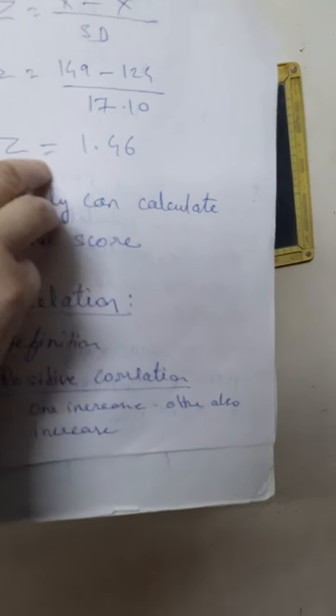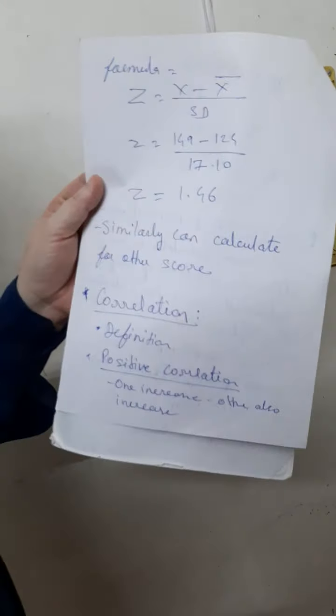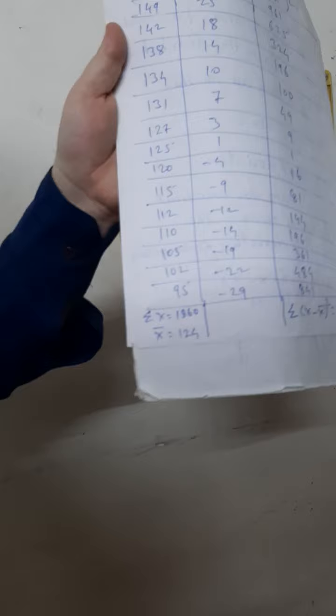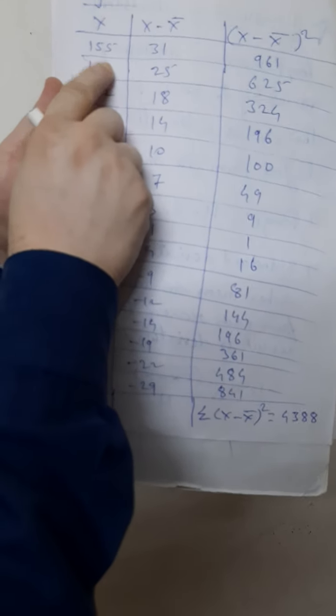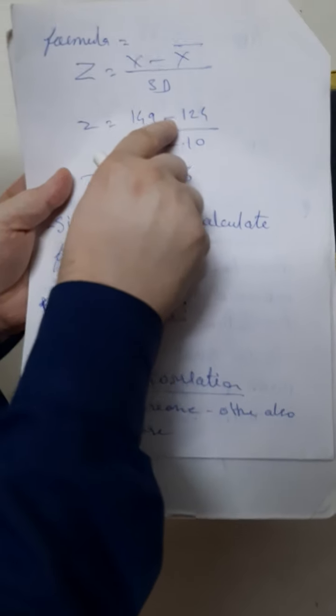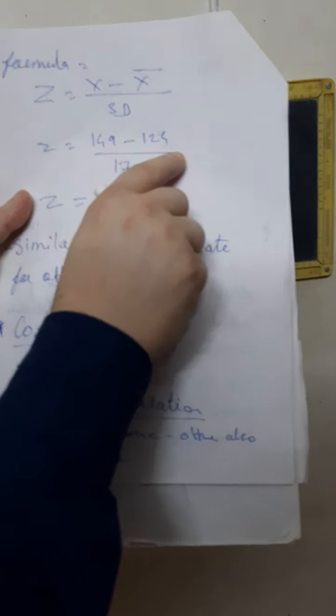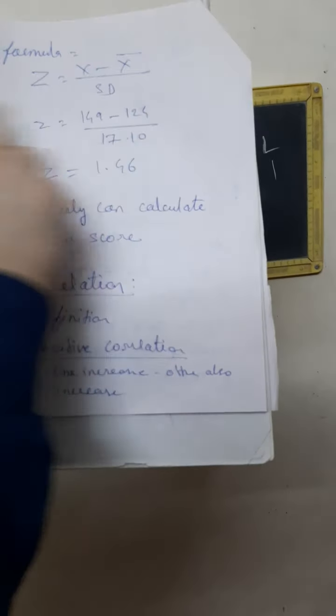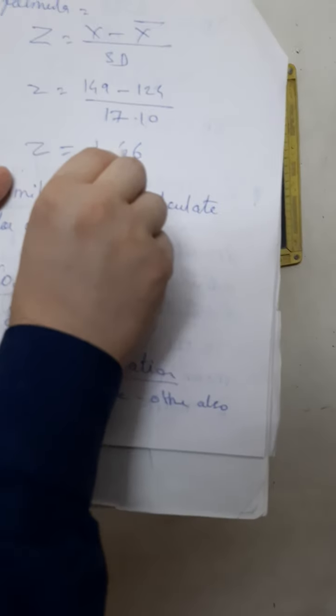x is any number from the distribution, and you can calculate z-score for each score. Let's take the example of 149 — this is x. So z-score for 149 equals: 149 minus x-bar (mean = 124), divided by SD = 17.10. If you calculate this, you will get 1.46. So the z-score for 149 is 1.46.